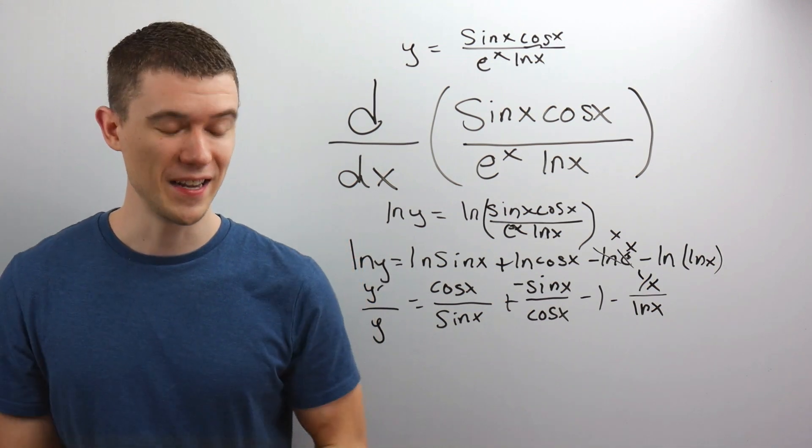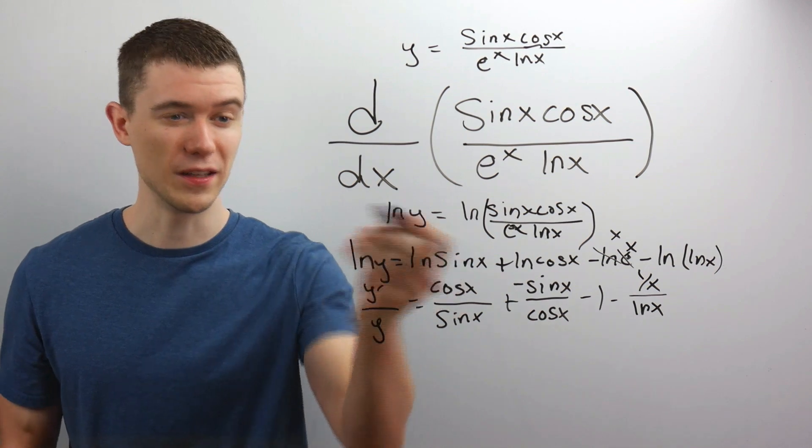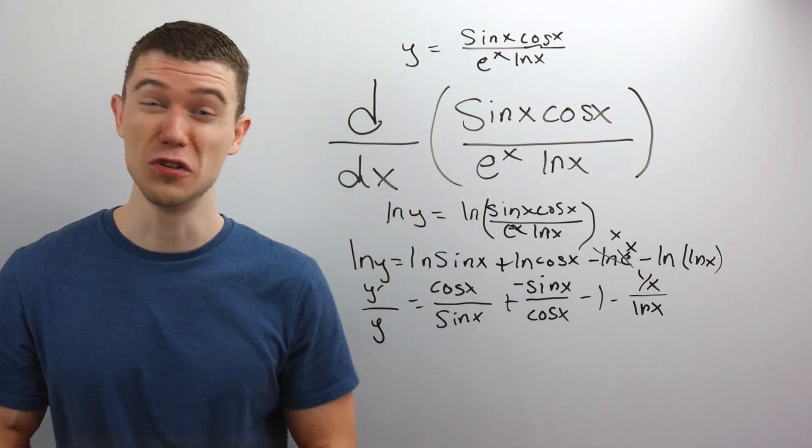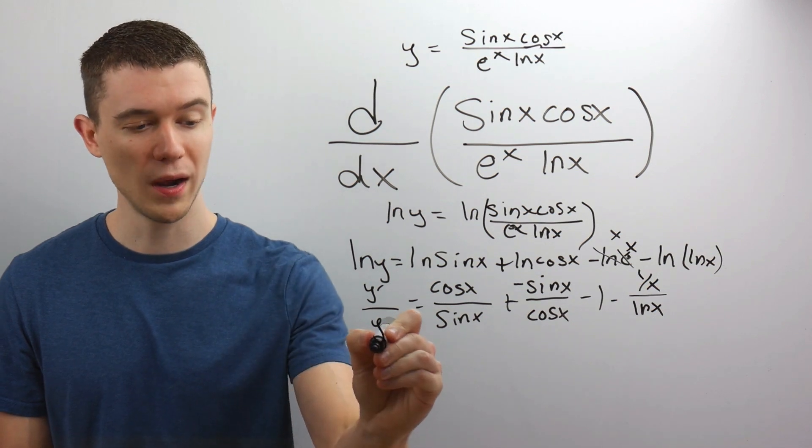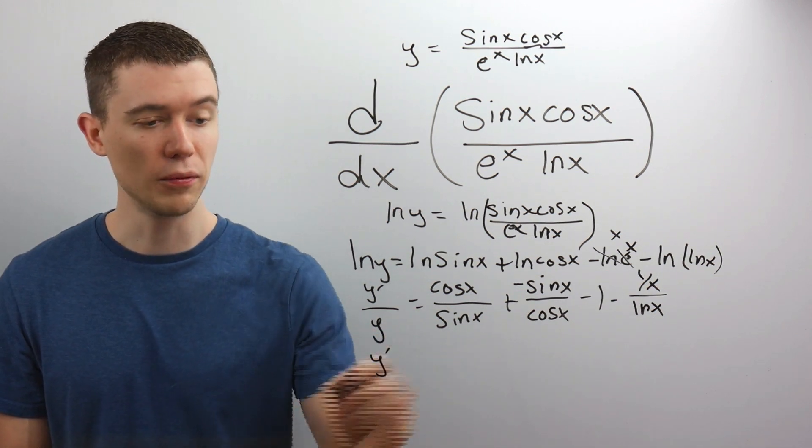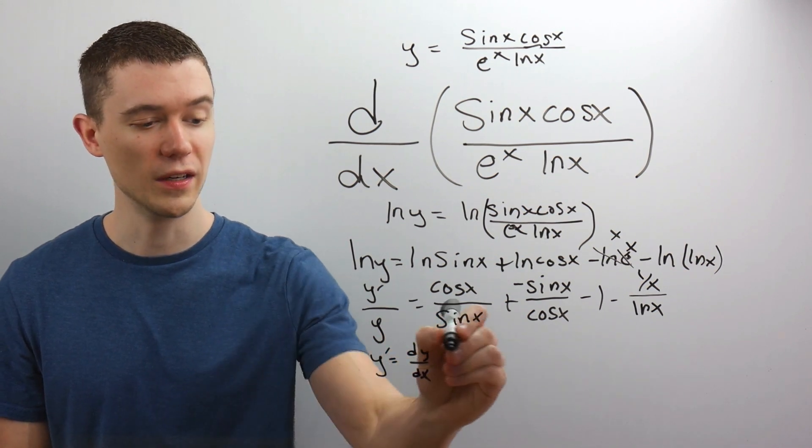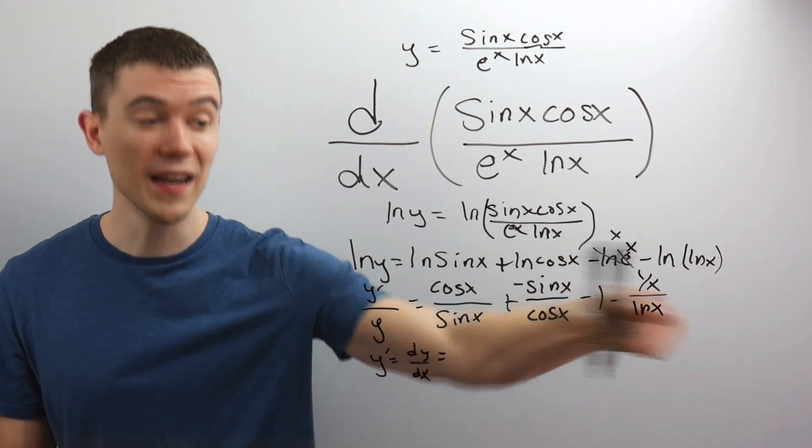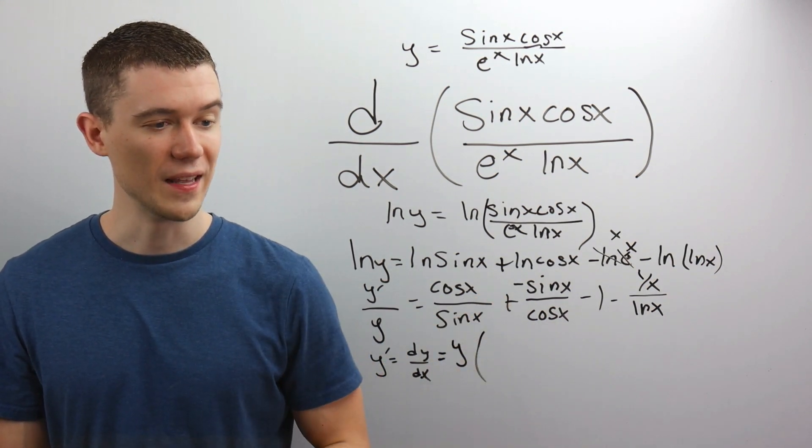And we're nearly done here because y prime is the answer. Y prime is the derivative of y, which was the original thing I wanted to find. So I'll just multiply both sides by this y. I'll say that y prime. Or if you like, you could call this dy dx if you prefer that notation. It's just this y times all this nonsense.